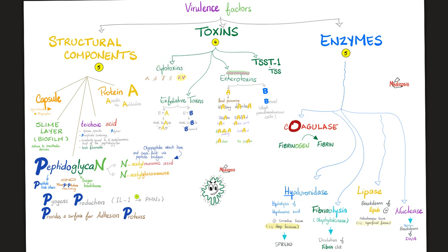Cytotoxins are very toxic to cells. Exfoliative toxins cause skin diseases such as staphylococcal scalded skin syndrome in children. Staph enterotoxins A and B: A causes food poisoning; B causes pseudomembranous colitis. Toxic shock syndrome toxin 1 causes toxic shock syndrome. Staph enzymes include coagulase, hyaluronidase, fibrinolysin, lipase, and nuclease.